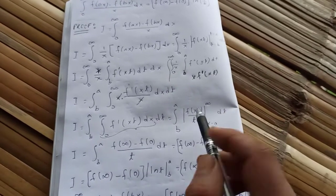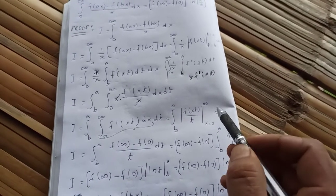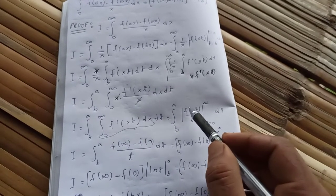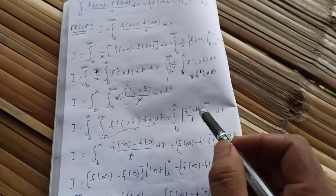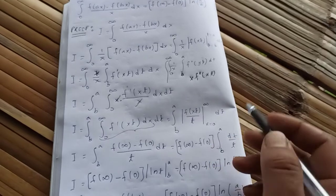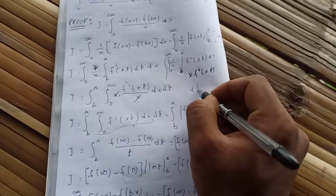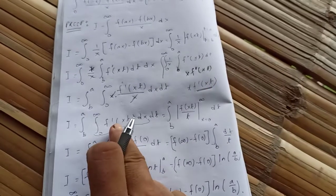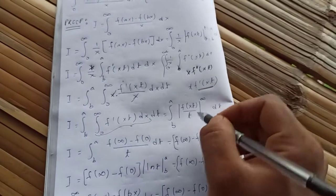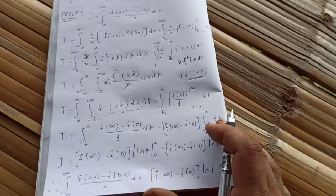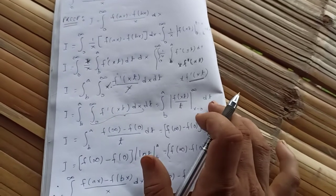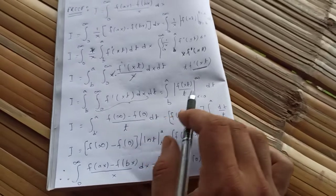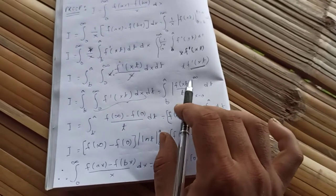The reason t appears in the denominator is that if you differentiate f(xt) with respect to x, you get t·f'(xt). So to obtain f'(xt) alone, we divide by t. Evaluating from x = 0 to infinity gives [f(xt)/t] from 0 to ∞.